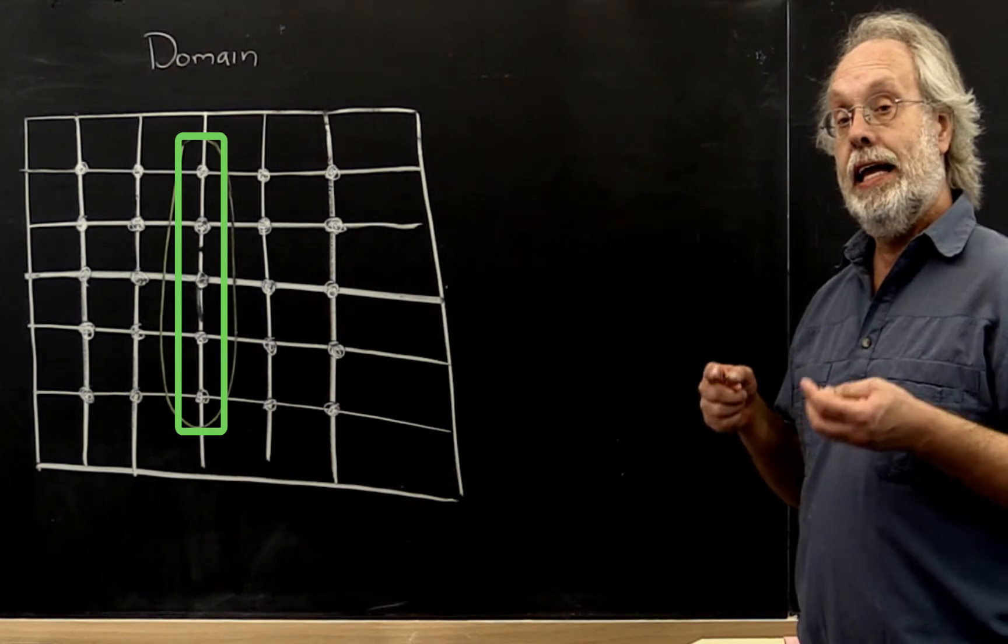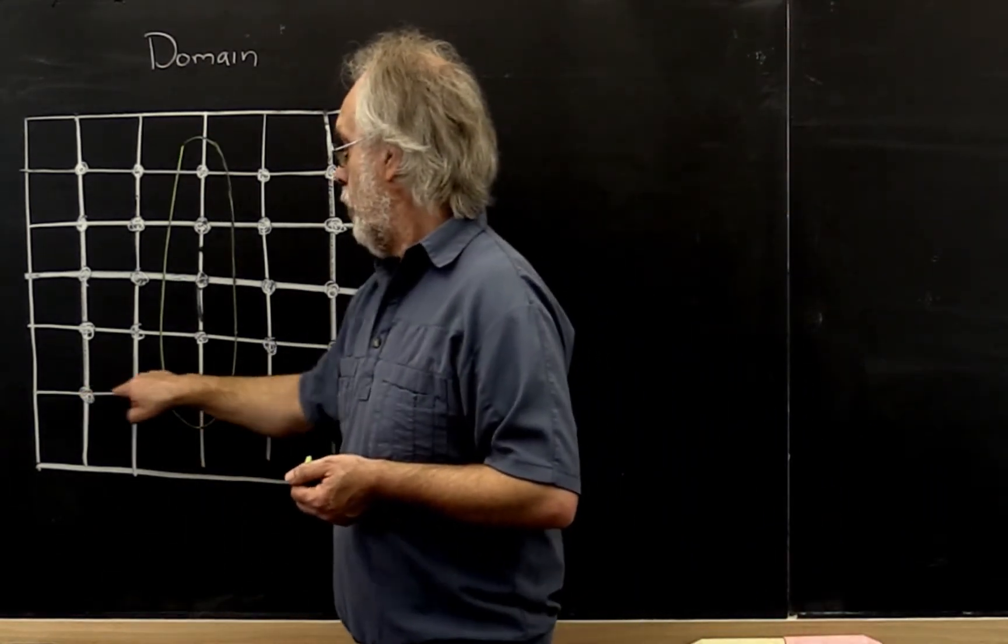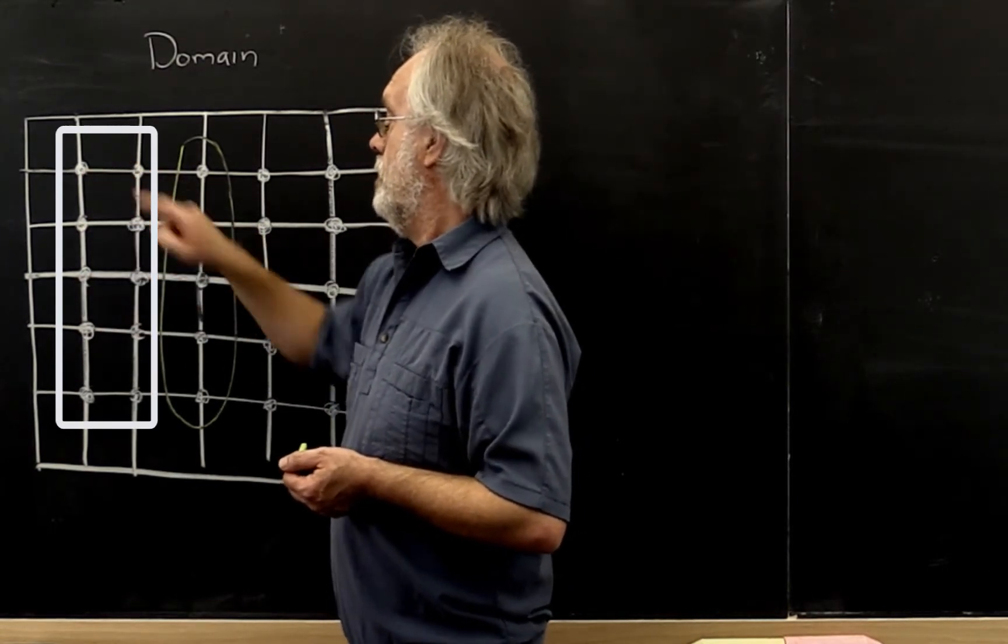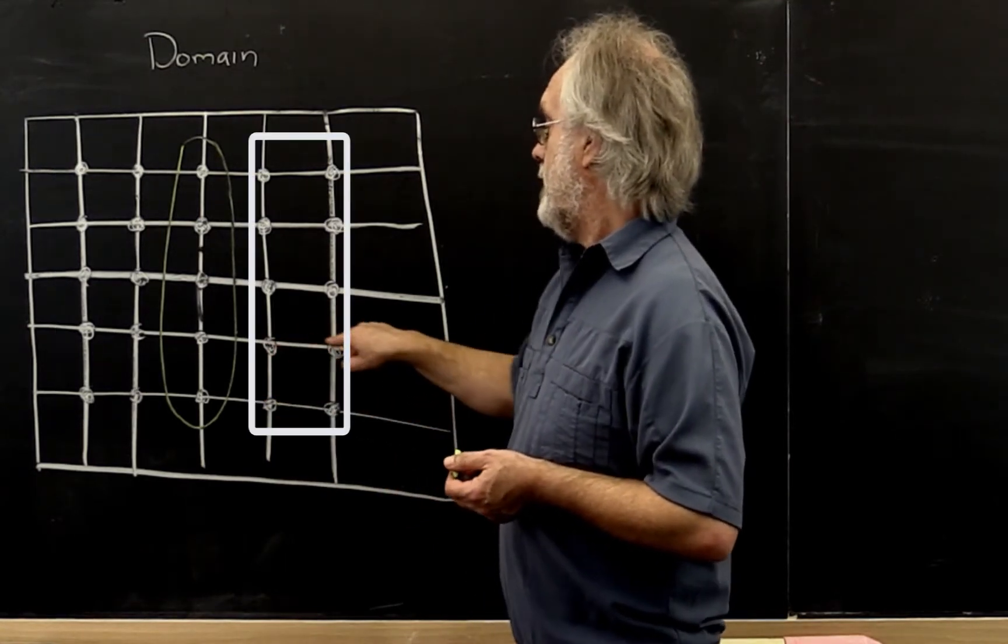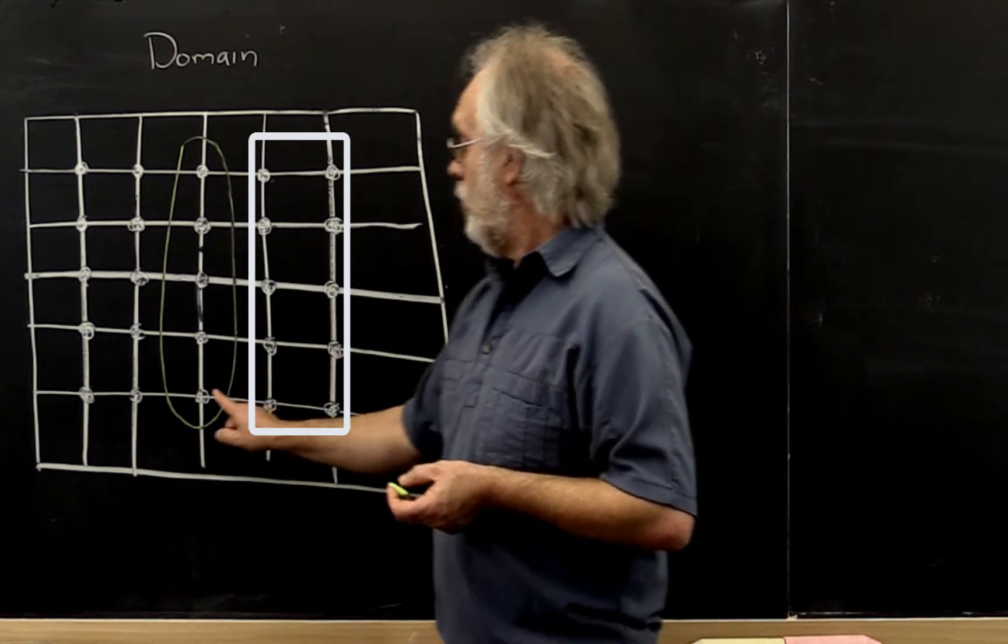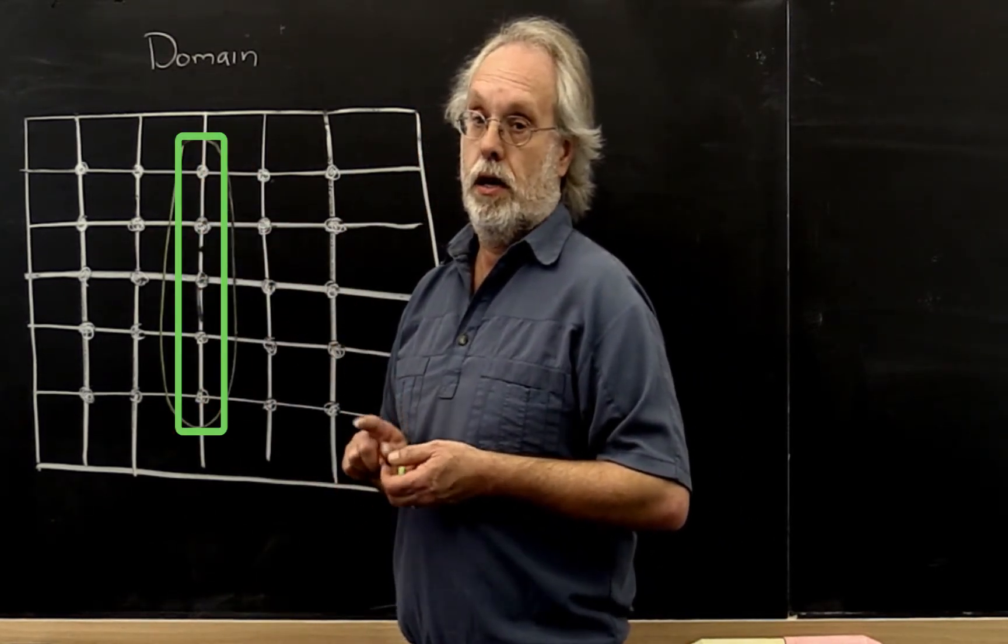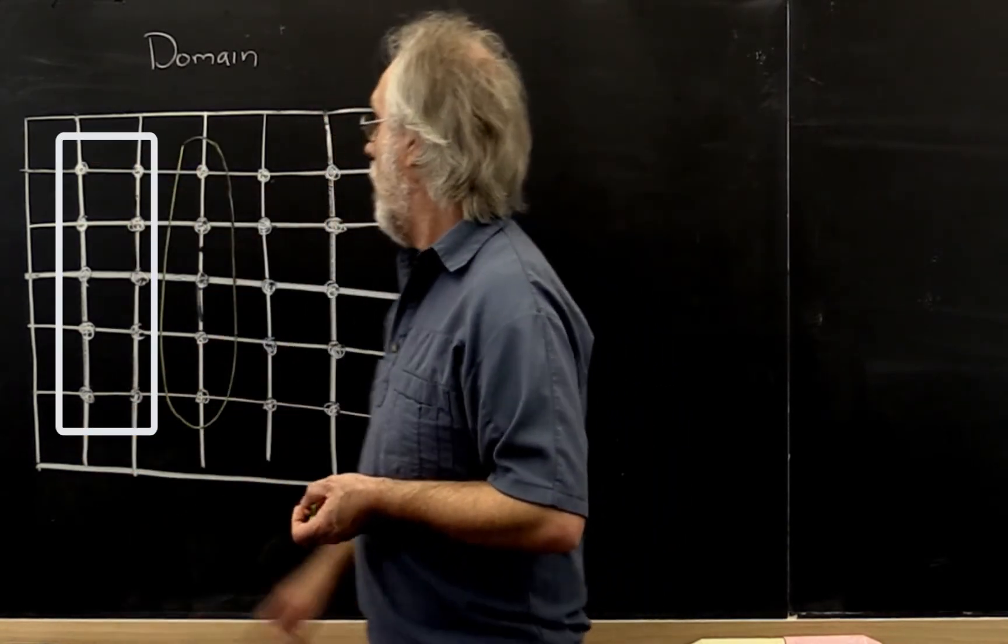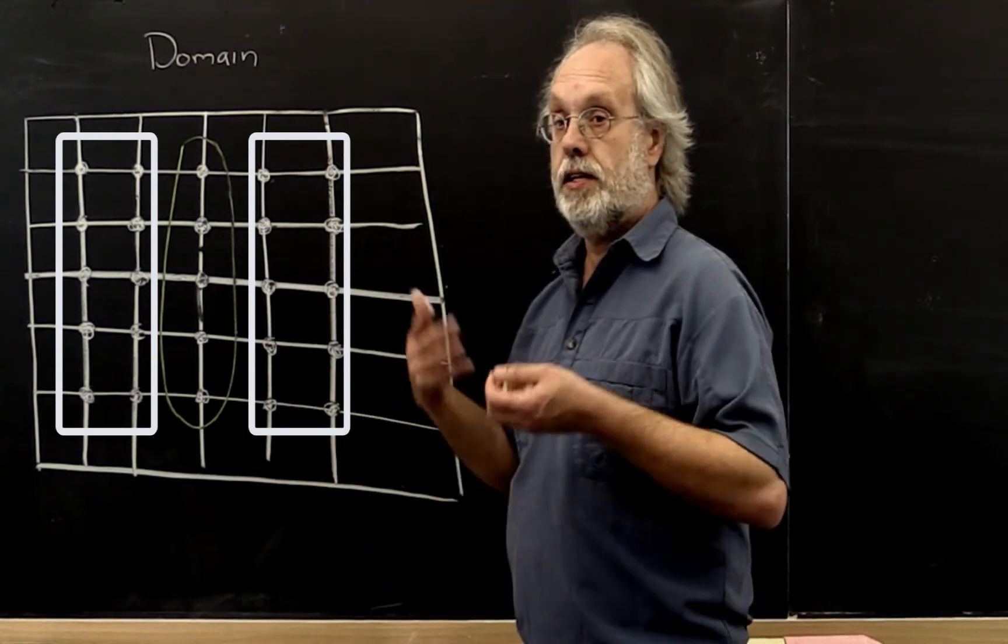Now if we ordered all of our points on this side of the separator first, and then all of the points on this side of the separator second, and then finally all of the points on the separator, then what do we notice? None of these points are connected to these points. That translates into zeros.